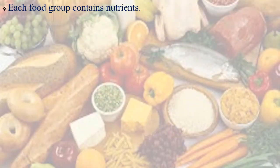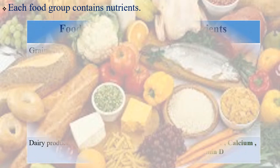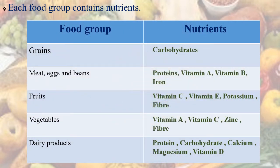Each food group contains nutrients. Now we will see what nutrients are contained in each food group. Grains contain carbohydrates. Meat, eggs and beans contain protein, vitamin A, vitamin B, and iron.